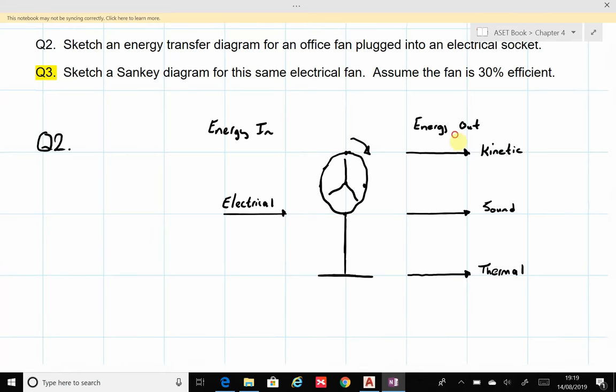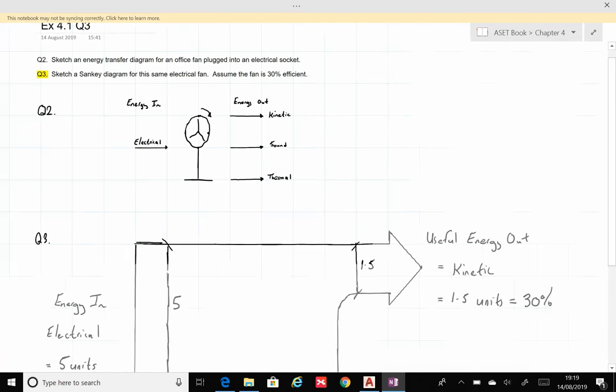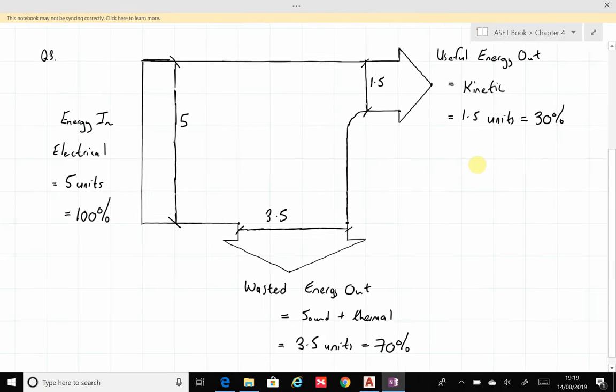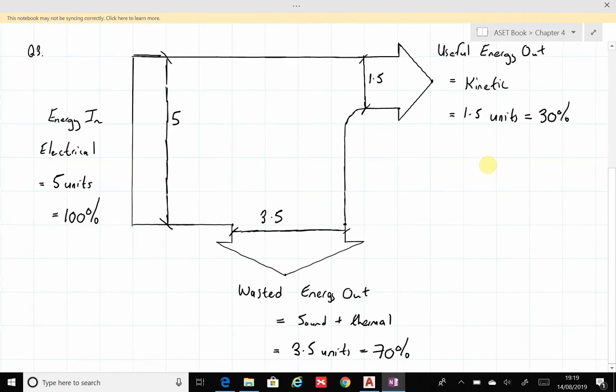We're using the basis of an efficiency of 30 percent. I have pre-completed a diagram—it did take a few moments to pull that together. You can see on the left-hand side the energy into the system, of course being electrical in this case, is represented by five units, which corresponds to 100 percent of the energy.